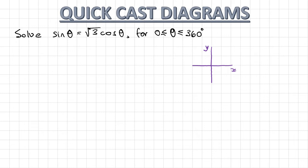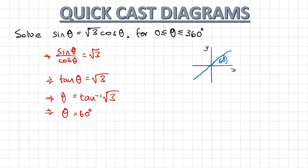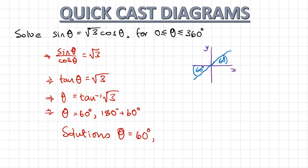In the last example, I divide both sides by cos, giving sine theta divided by cos theta equals root 3. I know that sine divided by cos is tan, so this becomes tan theta equals root 3. I do the tan inverse of root 3 on the calculator, which gives the exact value of 60 degrees. On my diagram, I draw 60 degrees. For tan, I draw a straight line — that means this angle is also 60 degrees, giving 180 plus 60 degrees. My two solutions are theta equals 60 and theta equals 240 degrees.